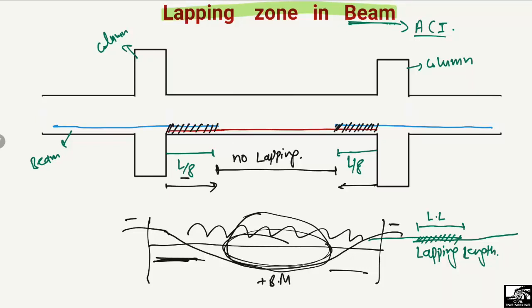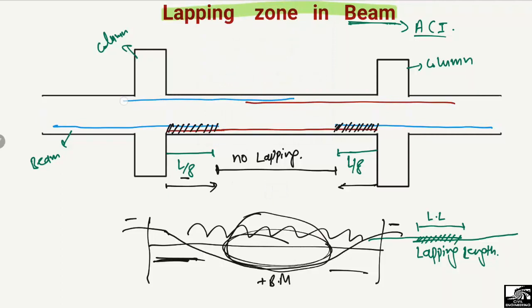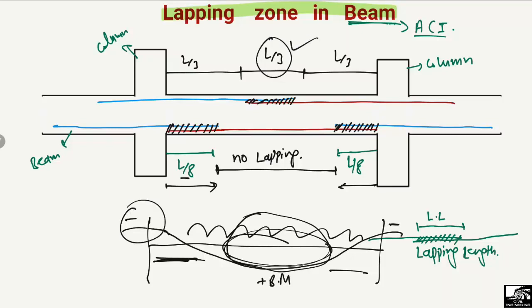Now at the supports, there are also rules. The code says that only in the upper section can bars be overlapped, and this distance is L/3. The overlapping can only be done at this region because we have maximum negative bending moment at the supports, so we provide the reinforcement at the top section of the beam. There is no such high bending moment in this top region near mid-span, so we can overlap our bars there.